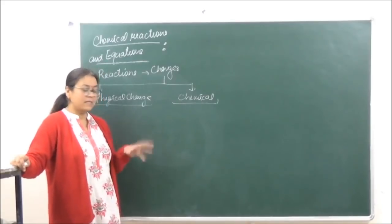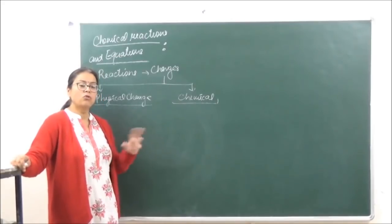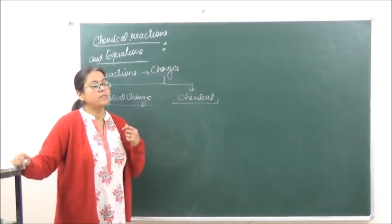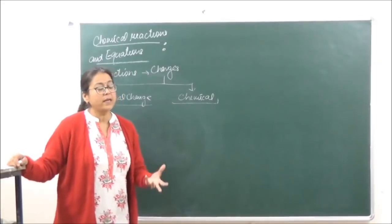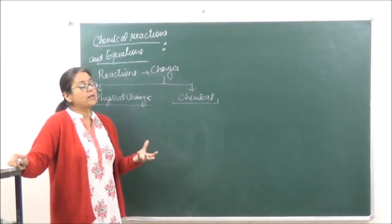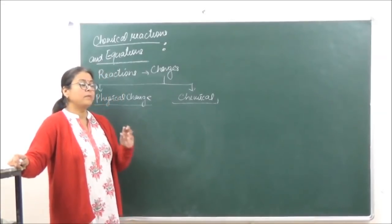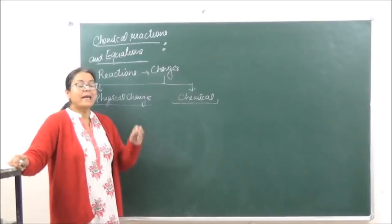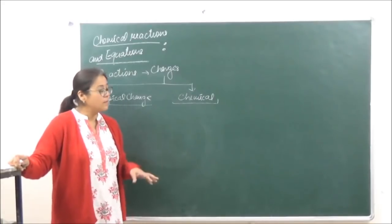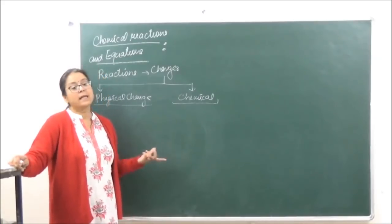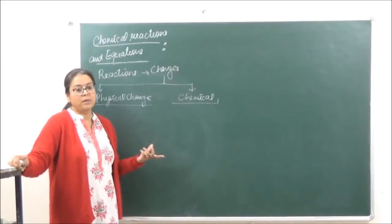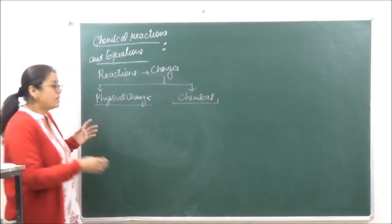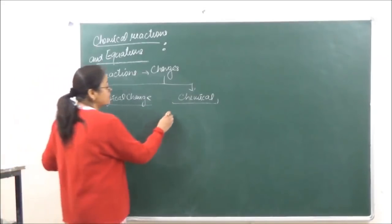We will discuss more about chemical change. Chemical change means that wherever the composition of the product is going to be different from that of the reactant, that is going to be a chemical change. When you add the reactants together and you get a product, if that product's characteristics do not match with any of the reactant's characteristics, that is going to be a chemical change. So we can do many activities regarding this.